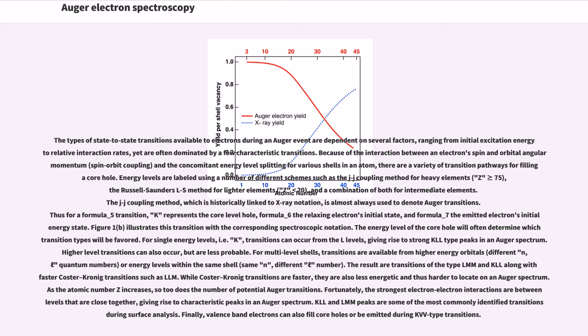Energy levels are labeled using a number of different schemes such as the jj coupling method for heavy elements (Z ≥ 75), the Russell-Saunders LS method for lighter elements (Z < 20), and a combination of both for intermediate elements. The jj coupling method, which is historically linked to X-ray notation, is almost always used to denote Auger transitions.